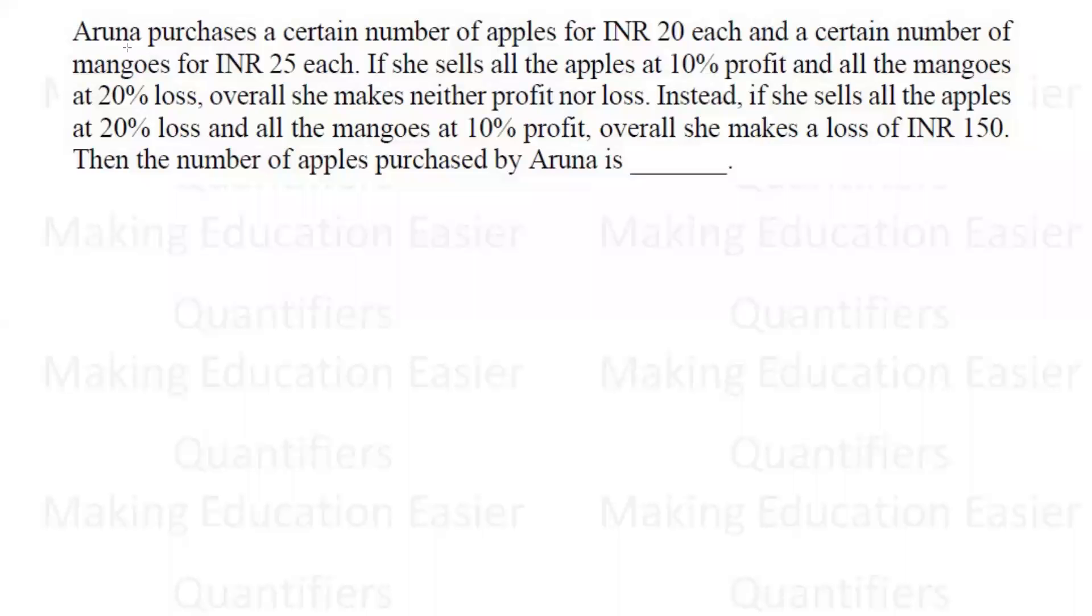The question says Aruna purchases a certain number of apples for 20 rupees each and a certain number of mangoes for 25 rupees each. She sells all the apples at 10% profit and all the mangoes at 20% loss. There is no profit, no loss.